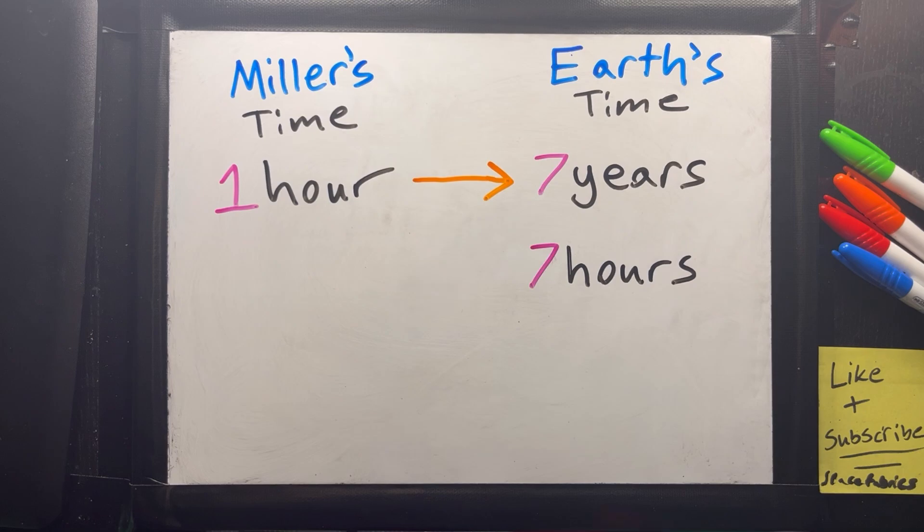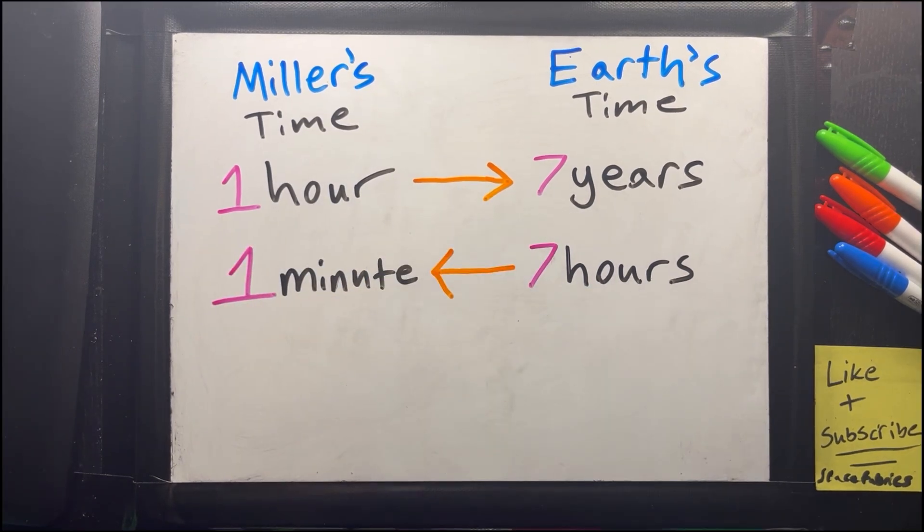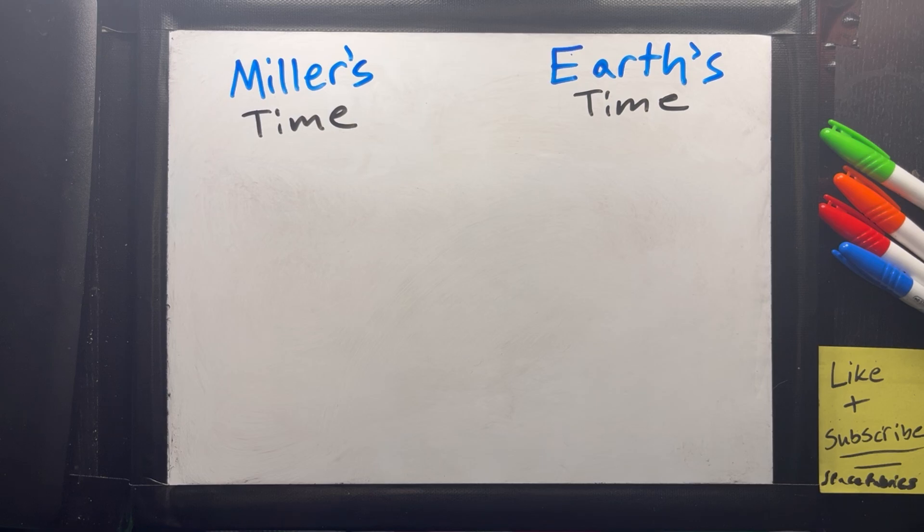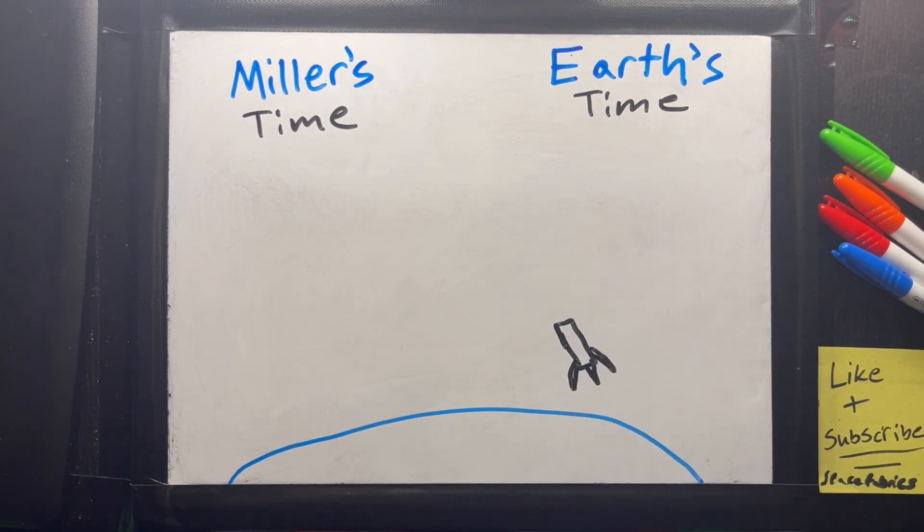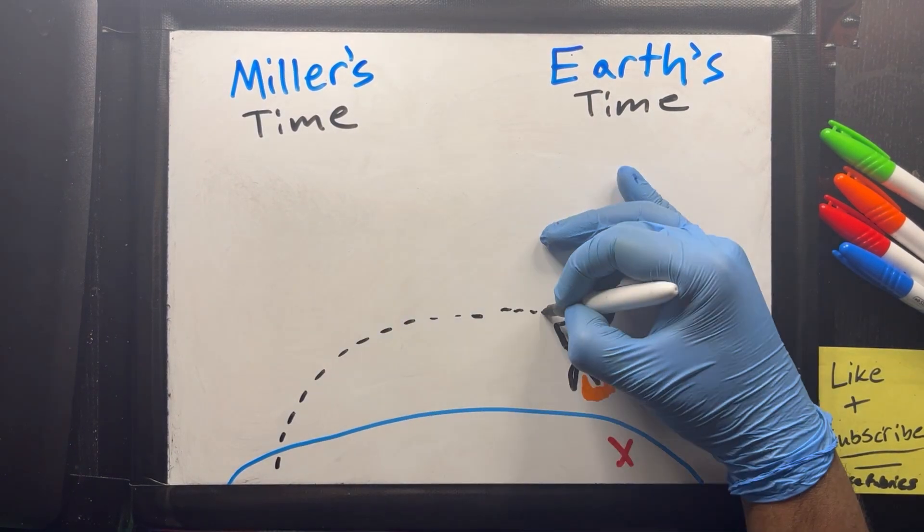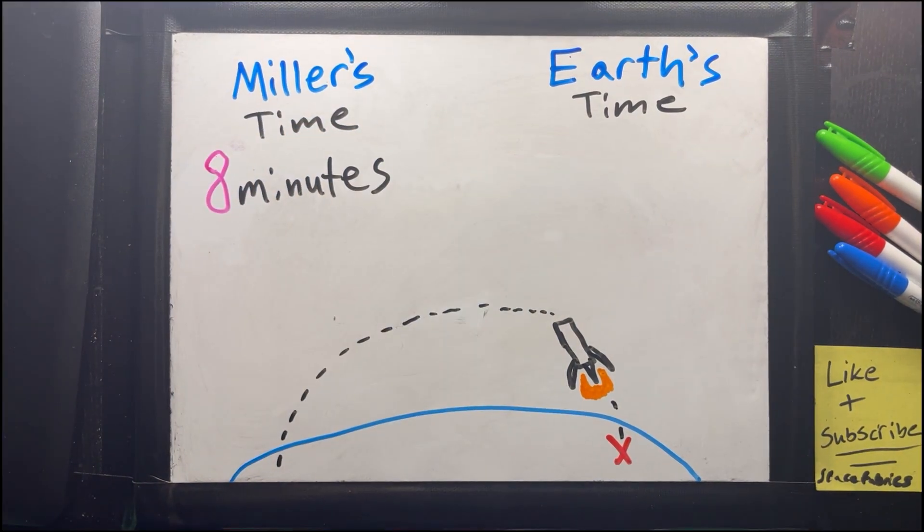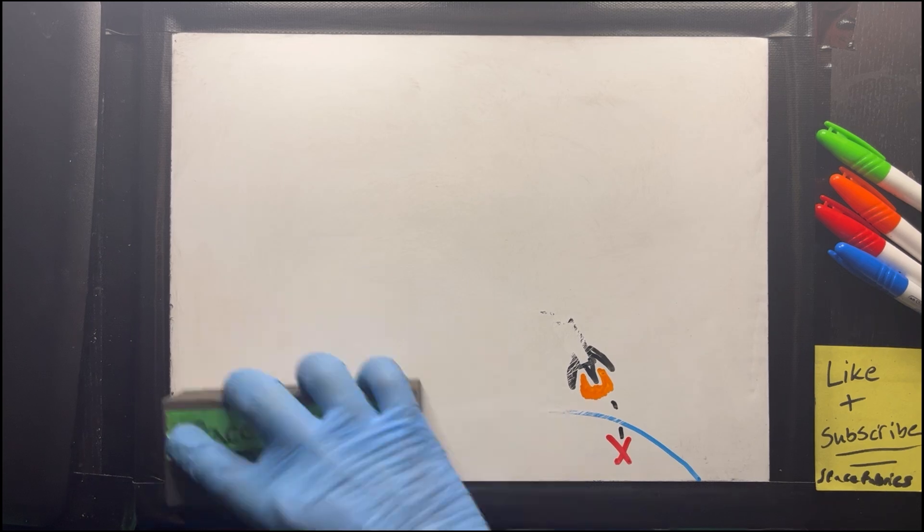That's 7 hours for every minute, to put those effects into perspective. So, let's say we were on Miller's planet and launched a Falcon 9 rocket, which typically takes about 8 minutes to launch and land again. During those 8 minutes, 3 days would have passed on Earth. This sort of time travel could be perfect for skipping through boring lectures.